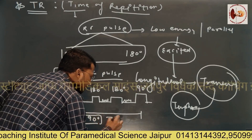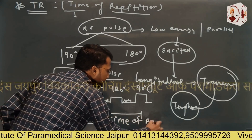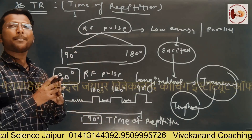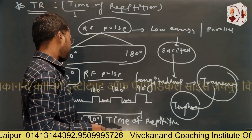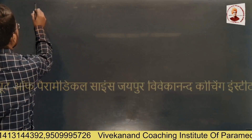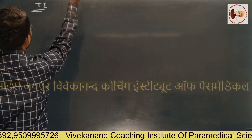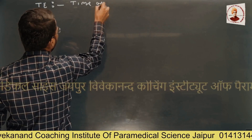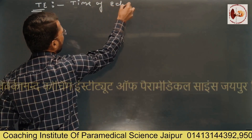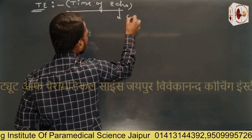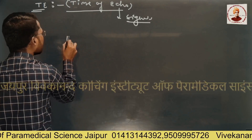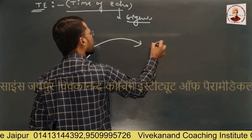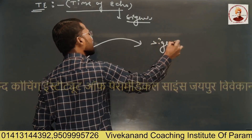We used the 90 degree RF pulse. Again, the Time of Repetition is TR. TR means that, now let's talk about TE. TE stands for Time of Echo. After giving the RF pulse, the signals we receive are the Free Induction Decay, or FID.